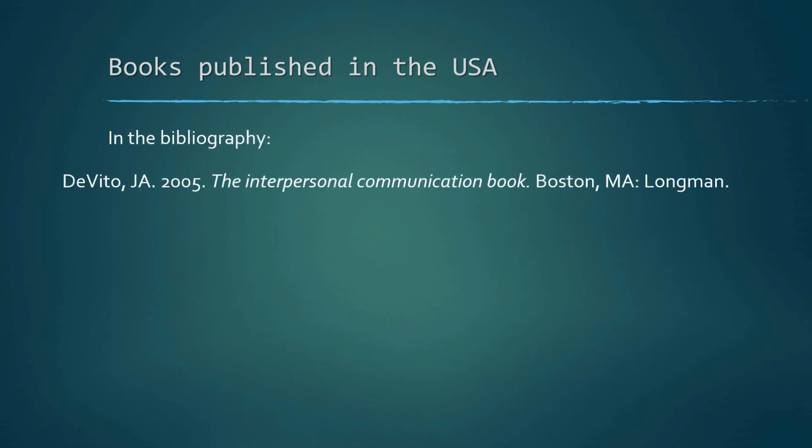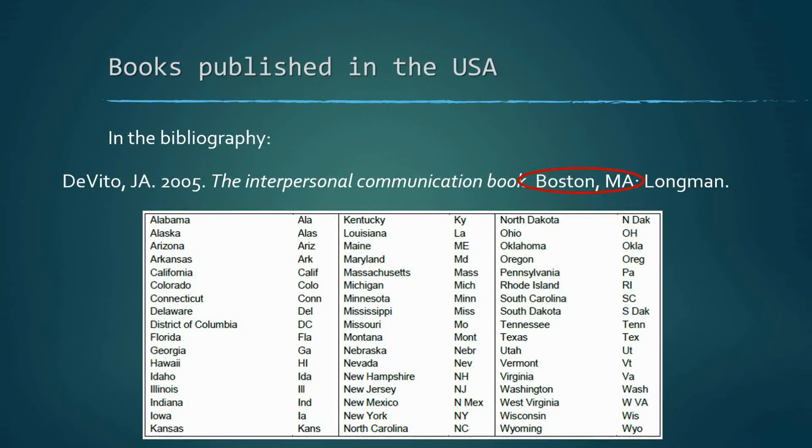For example, if a book was printed in Boston, Massachusetts, we would reference it in this way, with a comma separating the town or the city's name to that of its state. Here is a quick list of abbreviations for you, although a quick Google search will return much of the same.